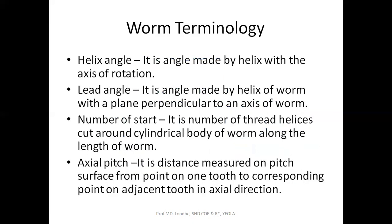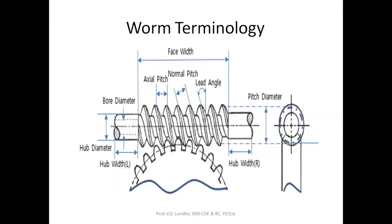Next is the lead angle. The lead angle is the angle made by the helix of the worm gear with the plane perpendicular to the helix surface. If you see here, this is the angle made by the tangent to the helical teeth surface, and the perpendicular to that surface — whatever angle is made by this tangent to the perpendicular is nothing but the lead angle.